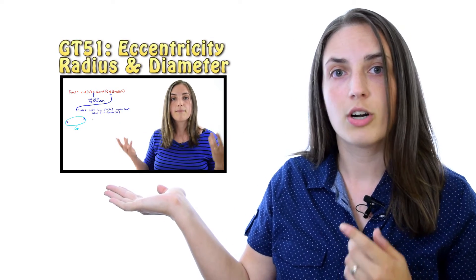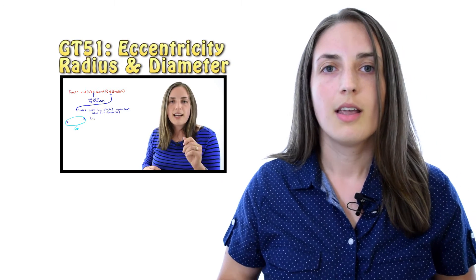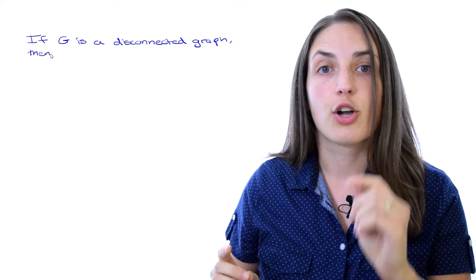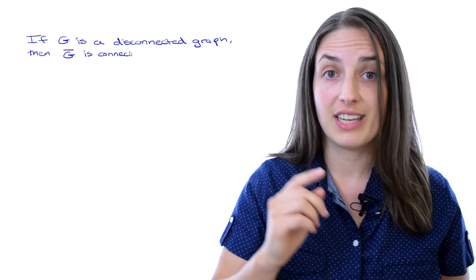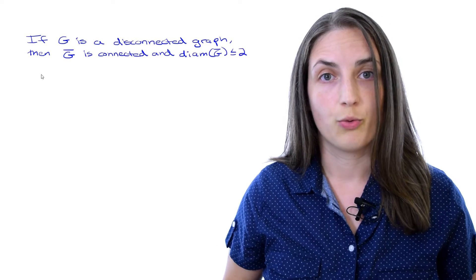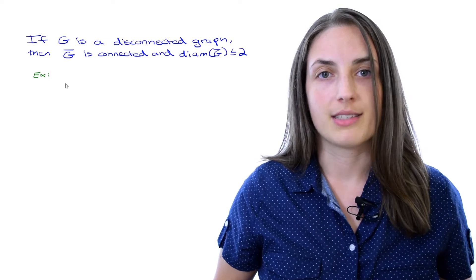If you would like a quick review of this terminology, just click on this link for a video or check the links in the description below. Our first example is the following: we want to prove that if we have G, a graph which is disconnected, then the complement of that graph is not only connected, its diameter is at most two. Before we work through a proof, let's check out a very small example.